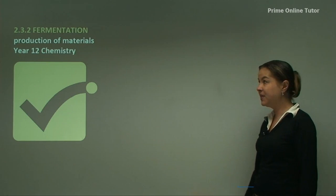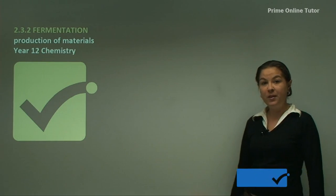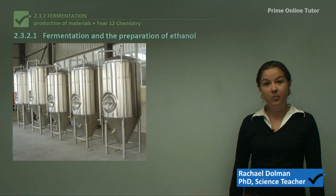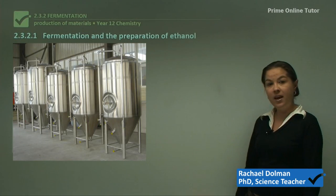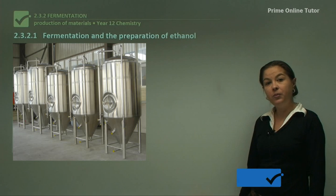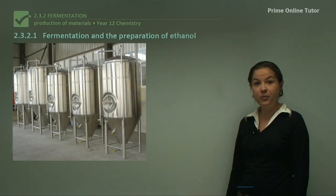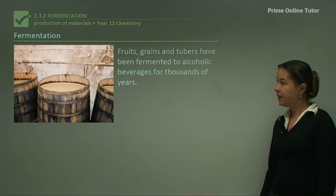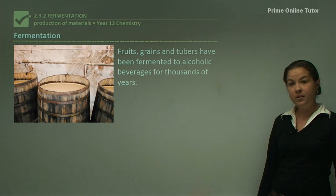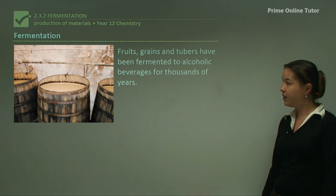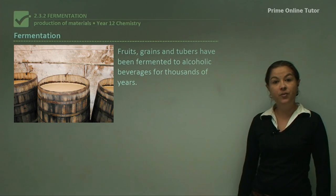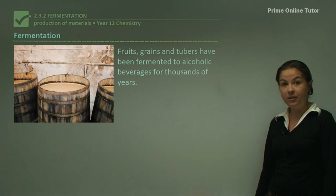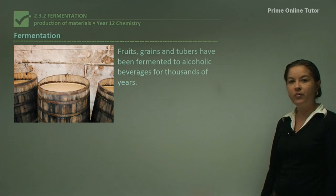In this section I'll be discussing fermentation. Fermentation is a natural process by which we can make ethanol from readily available things such as fruits and vegetables. Fruits, grains and tubers have been fermented to alcoholic beverages for thousands of years. For example, there's actually evidence that ancient Egyptians used to brew their own beer.